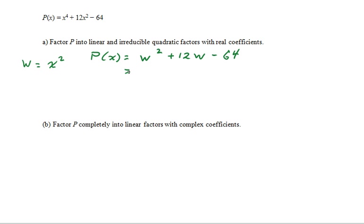And this does factor. Two numbers that multiply to be negative 64 and add to be 12 are positive 16 and negative 4. So, w plus 16, w minus 4.